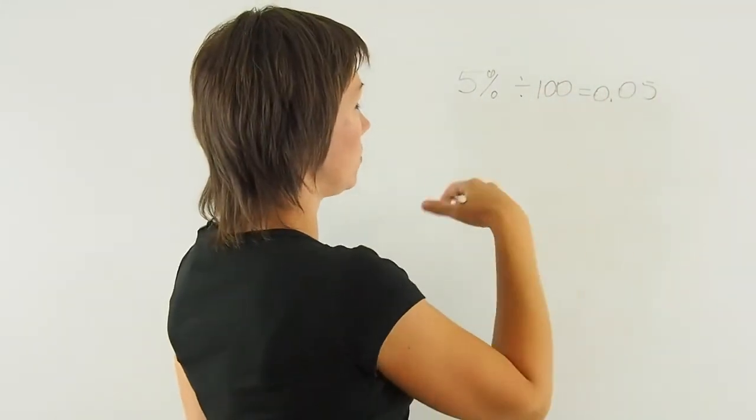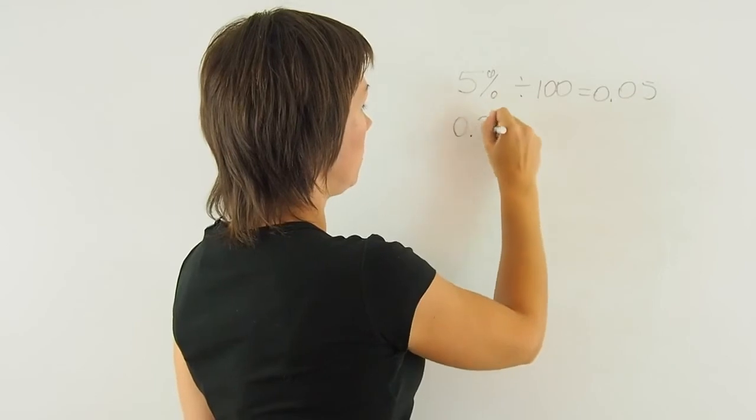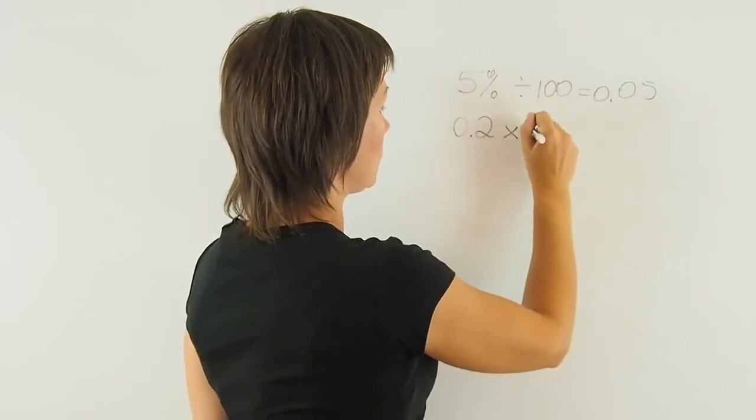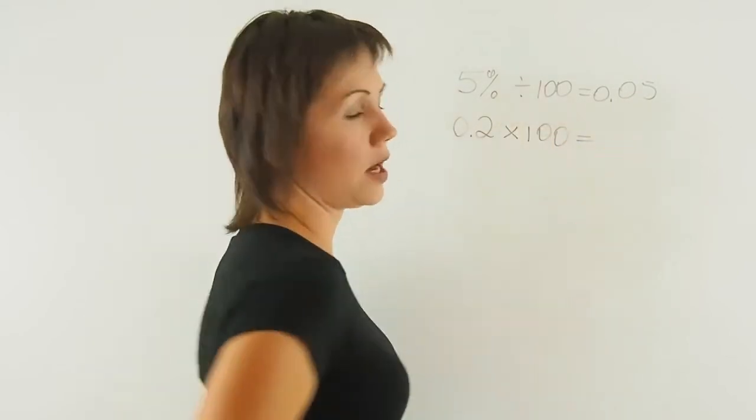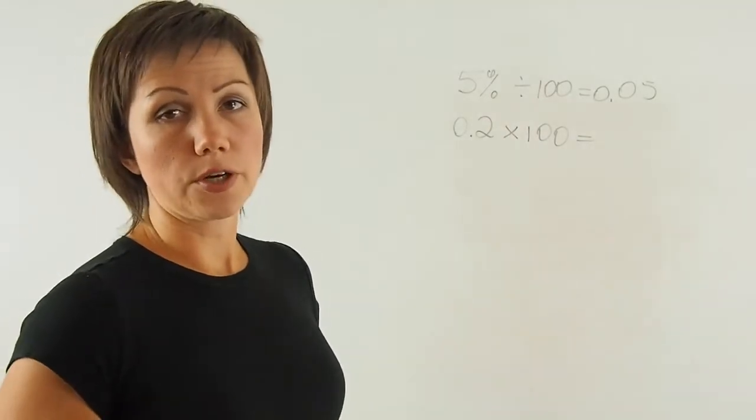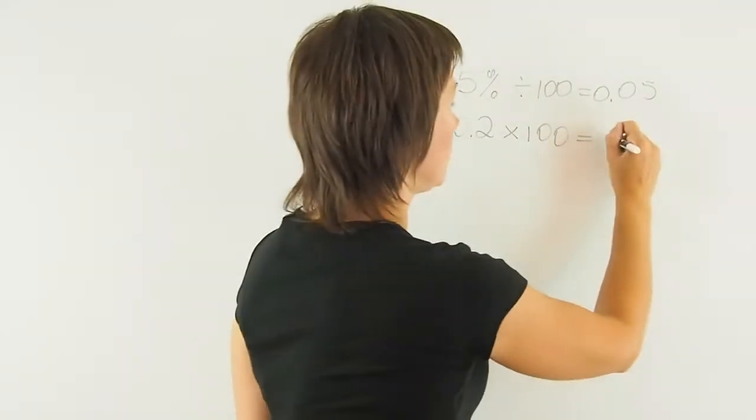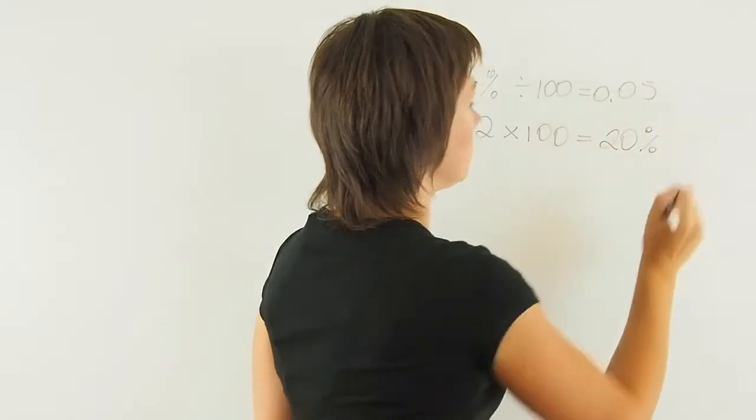If I want to go the opposite way, I'll do 0.2, for example, times 100. So I'm multiplying by 100 when turning decimals into percent, and that will give me 20%.